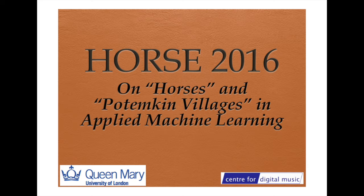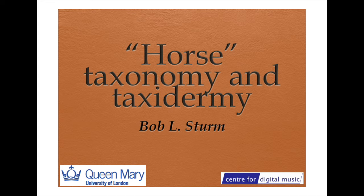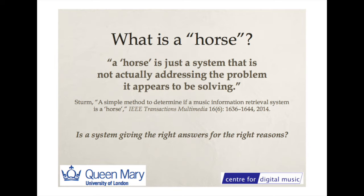Moving on to my talk: horse taxidermy and taxonomy, to give some basis for and history of what a horse is. A horse is merely a system that is not actually solving the problem it appears to be solving. The question I'm interested in is: is a system giving the right answer for the right reasons?